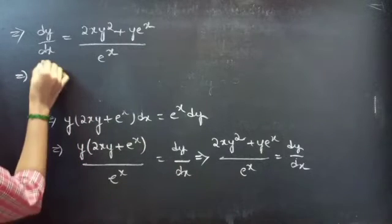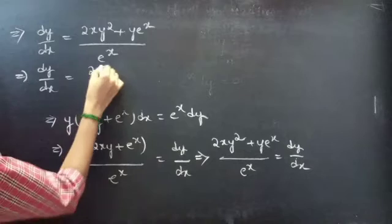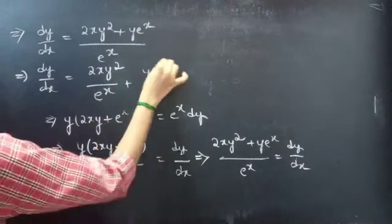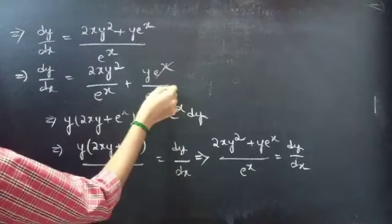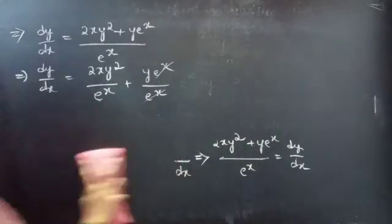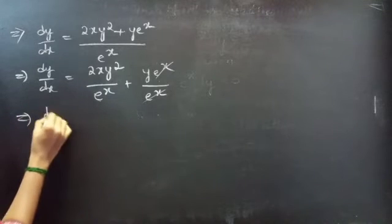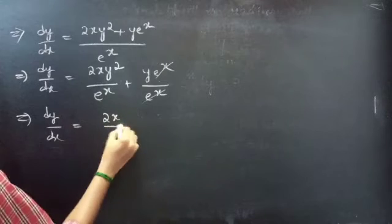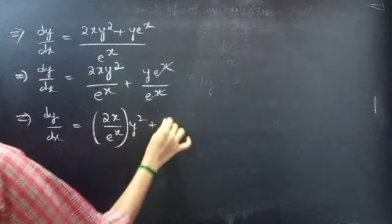Now we will split this into two terms: dy by dx equals to 2xy² by e^x plus y·e^x by e^x. e^x gets cancelled in the second term of RHS. The reduced equation is dy by dx equals to 2x·e^(-x)·y² plus y.